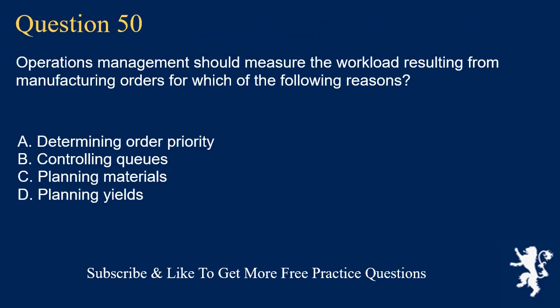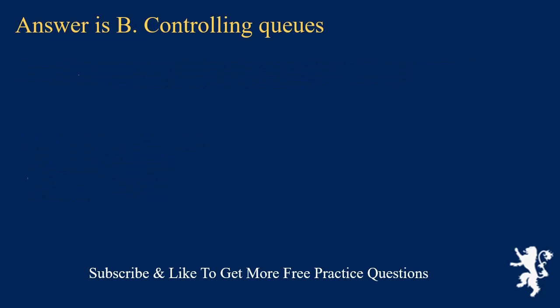Question 50. Operations management should measure the workload resulting from manufacturing orders for which of the following reasons? A. Determining order priority. B. Controlling queues. C. Planning materials. D. Planning yields. Answer is B. Controlling queues.